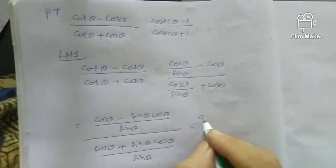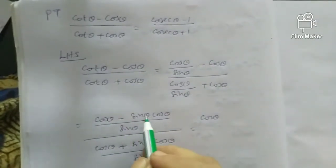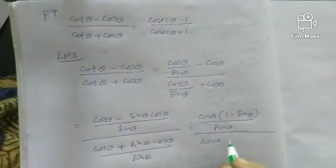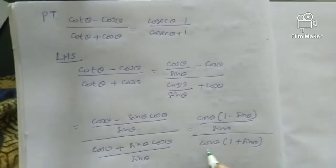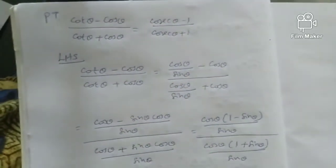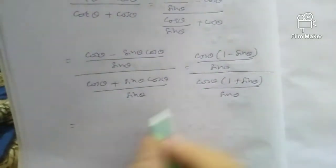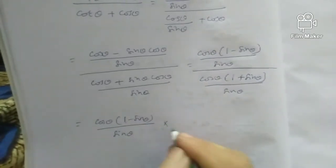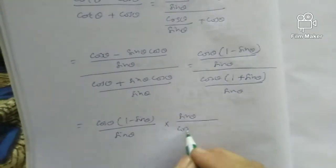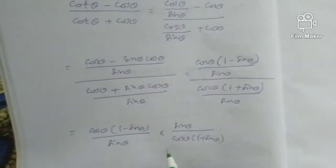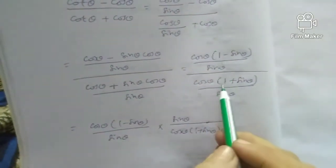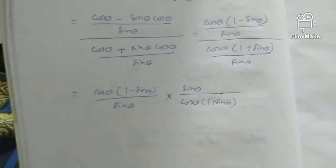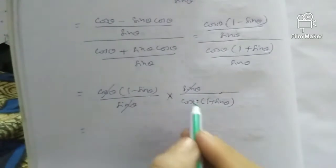Taking cos theta as common in the numerator gives 1 minus sin theta by sin theta, and in the denominator, taking cos theta as common gives 1 plus sin theta by sin theta. Then we multiply by the reciprocal of the denominator, and cancel sin theta and cos theta.